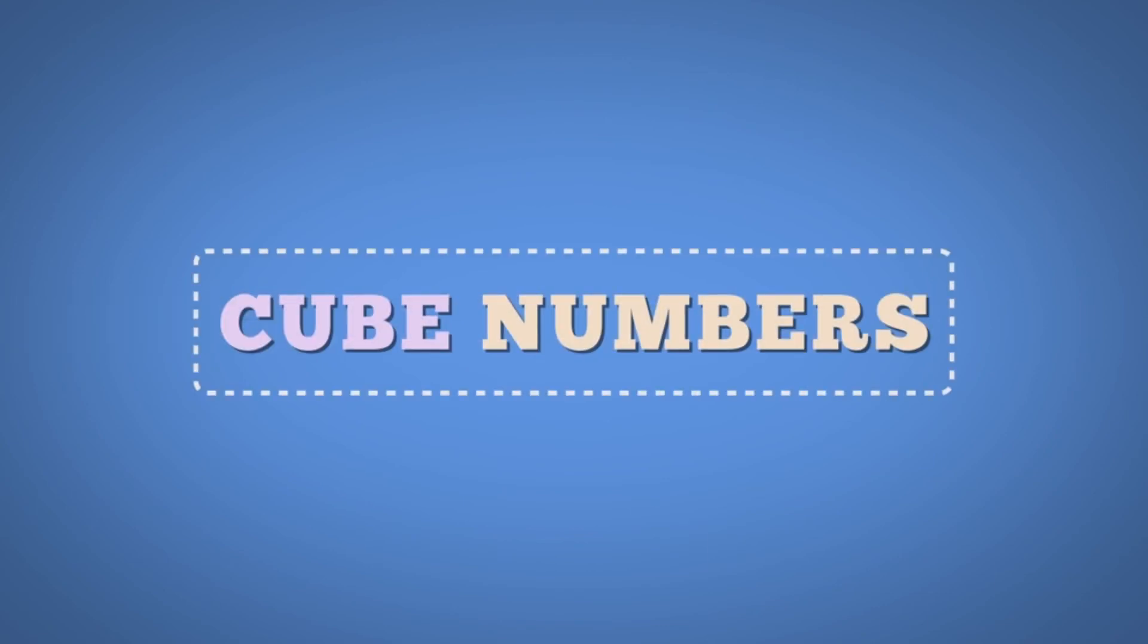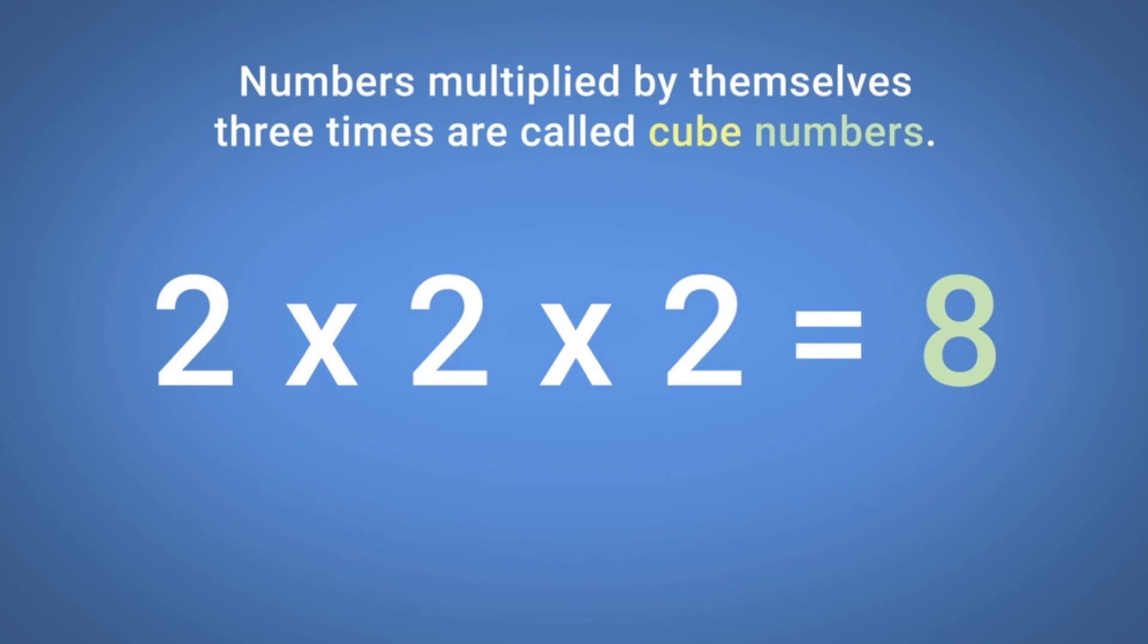Cube numbers. Numbers multiplied by themselves 3 times are called cube numbers.